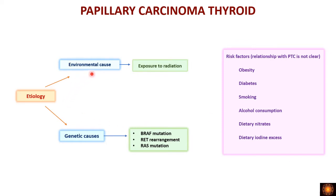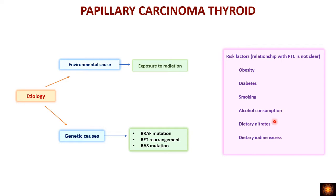The most important environmental cause in the etiology is exposure to radiation. Genetic causes include mutations in three important genes: BRAF, RET rearrangement, and RAS mutations. There are also risk factors associated with papillary carcinoma, though the exact relationship is not clear. These include obesity, diabetes, smoking, alcohol consumption, dietary nitrates, and dietary iodine excess.